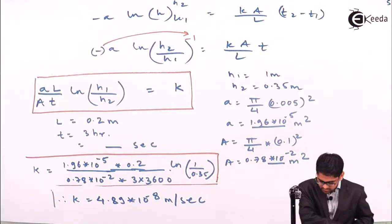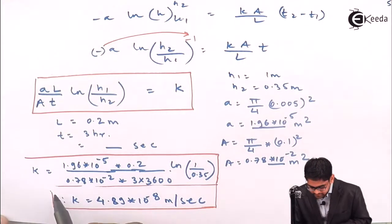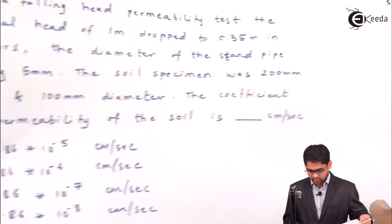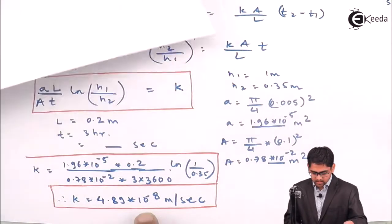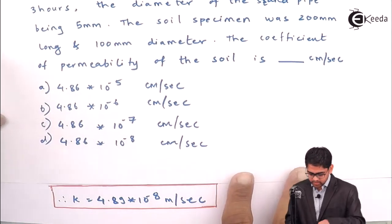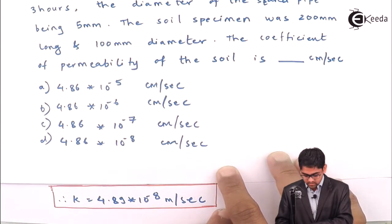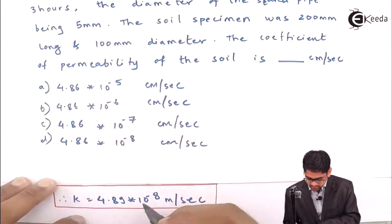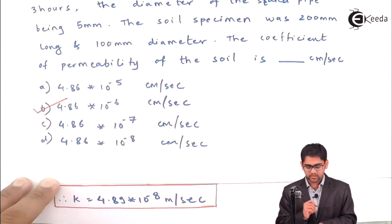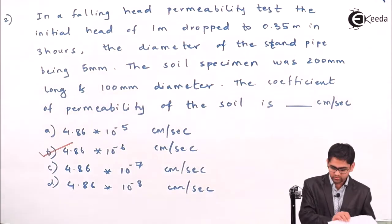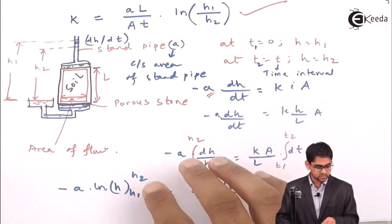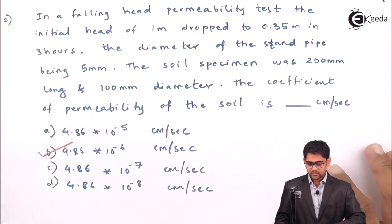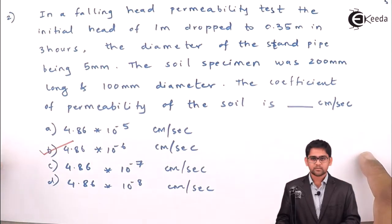You will get the answer of 4.89×10⁻⁸ meter per second. The options list 4.86, so the small rounding difference doesn't matter. To convert from meters to centimeters, multiply by 100, which shifts the exponent from 10⁻⁸ to give approximately 4.86×10⁻⁶ cm/s. So option B is the correct answer. We have also seen how to derive the formula within just a couple of minutes. This finishes the second problem in the permeability of soil chapter. We will move ahead with the next problem in a couple of seconds.